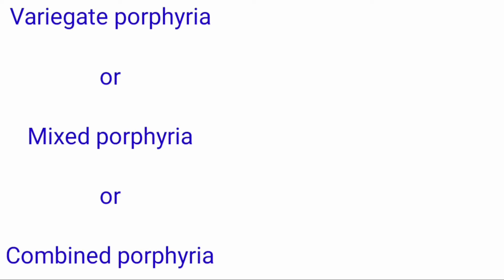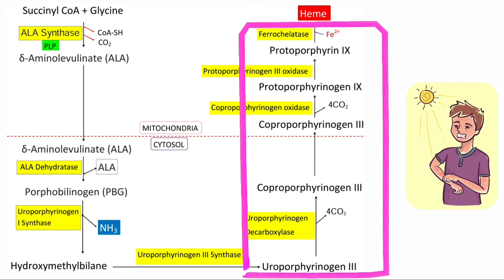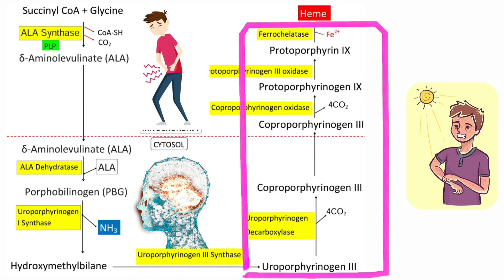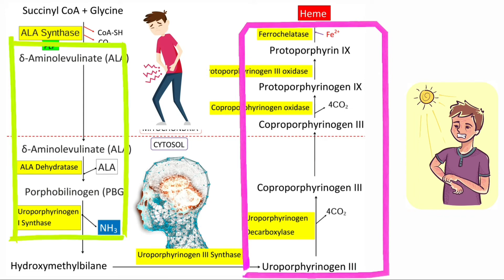Coming to clinical features, as the name itself indicates, it is a mixed or combined type of porphyria. Photosensitivity is seen when porphyrins accumulate, whereas abdominal pain or neuropsychiatric symptoms are seen when ALA or porphobilinogen accumulate. In this condition, ALA, porphobilinogen, and porphyrins are all accumulated, leading to both neuropsychiatric, abdominal, and photosensitivity symptoms. That is why it is called combined porphyria.